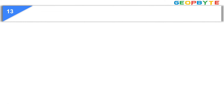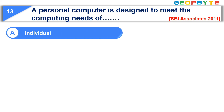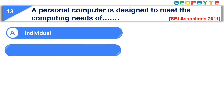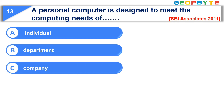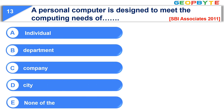Moving to question number thirteen. A personal computer is designed to meet the computing needs of. Option A: Individual. Option B: Department. Option C: Company. Option D: City. Option E: None of these. The correct answer is option A, Individual.